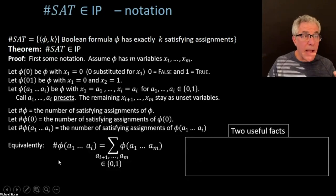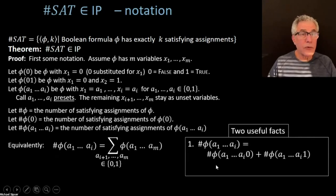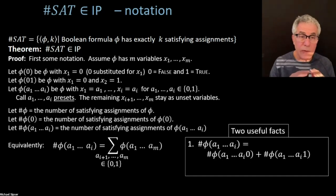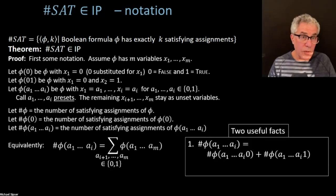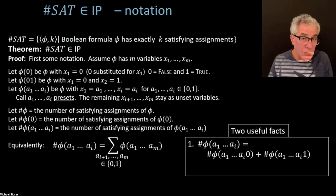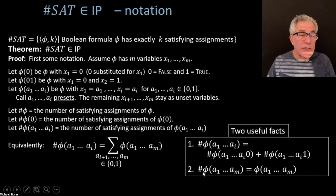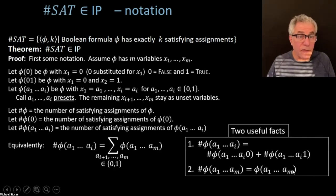Here are two critical facts about this number sign notation. First, if I preset the first i values to something, I can in addition set the next variable either to zero or to one, and I get this relationship — which is a generalization of the fact that the total number of satisfying assignments of the formula equals the number when x1 is zero plus the number when x1 is one. They together have to add up to the total number, because x1 is going to be either zero or one. That's fact number one. Fact number two is that if I preset everything — all of the variables — so there are no variables left, then the number of satisfying assignments subject to that full preset is just whether or not I've satisfied the formula, which is the value of the formula on those presets.